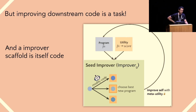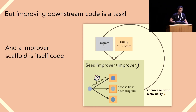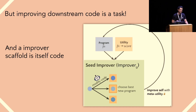One thing to observe, however, is that the improver scaffold itself is code — it is a program. The key idea behind this paper is just that you can take a scaffold that improves code and apply this general approach of asking a scaffold to improve code. You can actually pass that scaffold to the code-improving scaffold itself — simply take the scaffold and ask the language model to return an improved version of the improver.